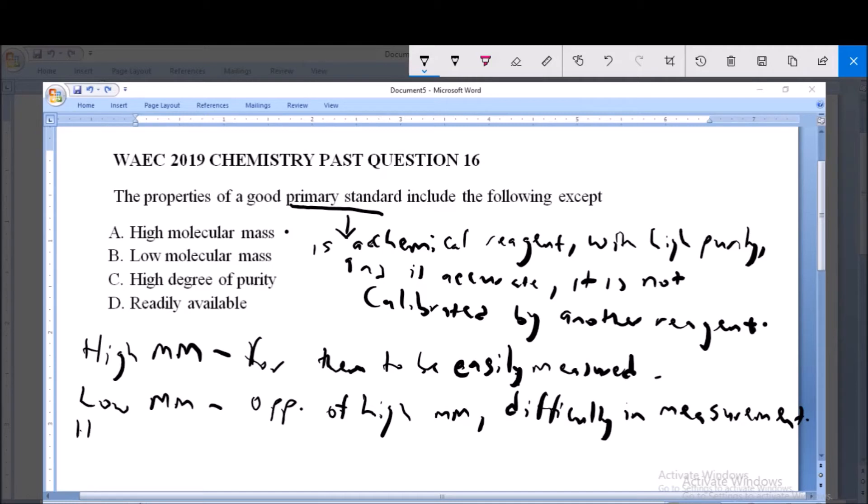High degree of purity. For high degree of purity, the primary standard must have a sufficiently high degree of purity such that calibration is not needed.